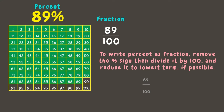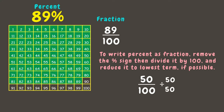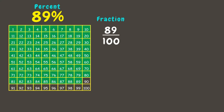Another example: let's convert 50 percent into a fraction. Remove the percent symbol and divide by 100, giving us 50/100. This fraction can still be reduced to its lowest term by dividing both the numerator and denominator by the GCF, which is 50. Dividing gives us one half as the final fraction.